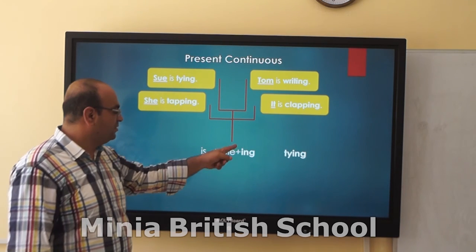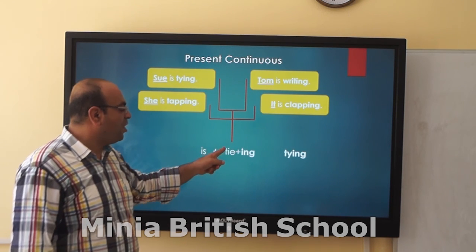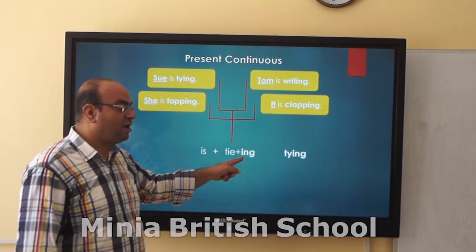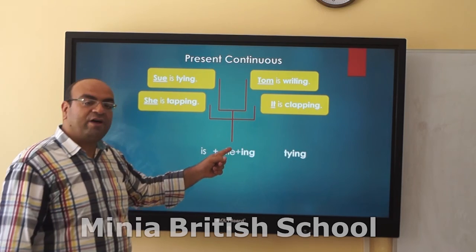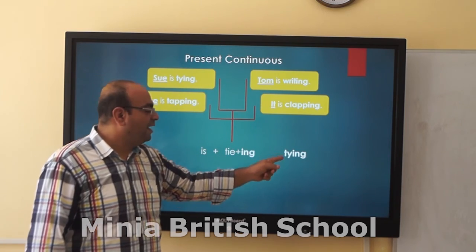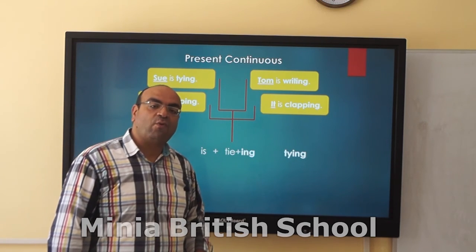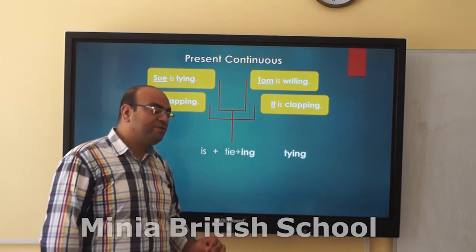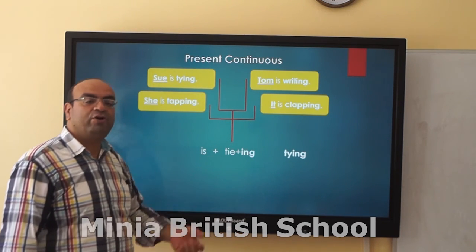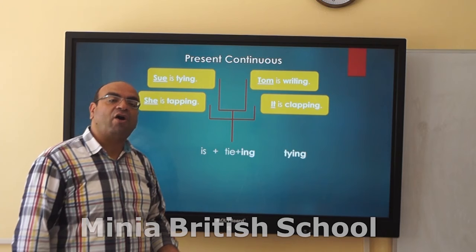For example, 'toy' becomes 'toying' — I will move the I, then E, and that's how to tie. That's every time I have a verb that ends with -ING.